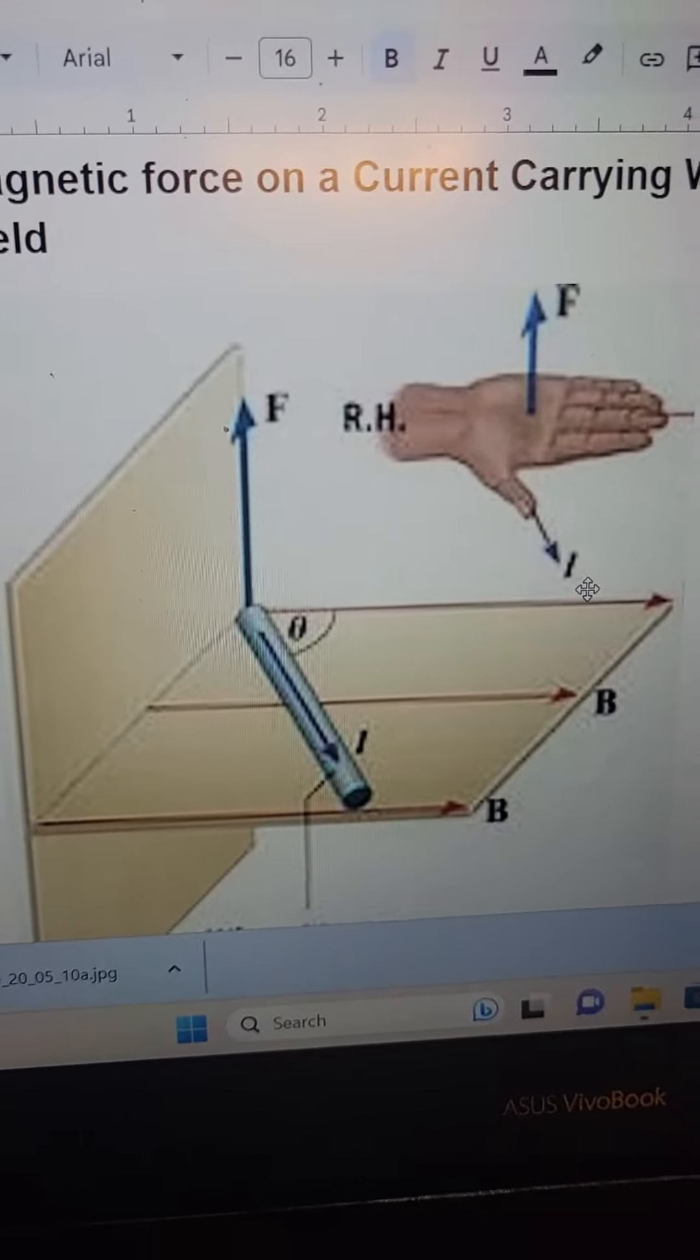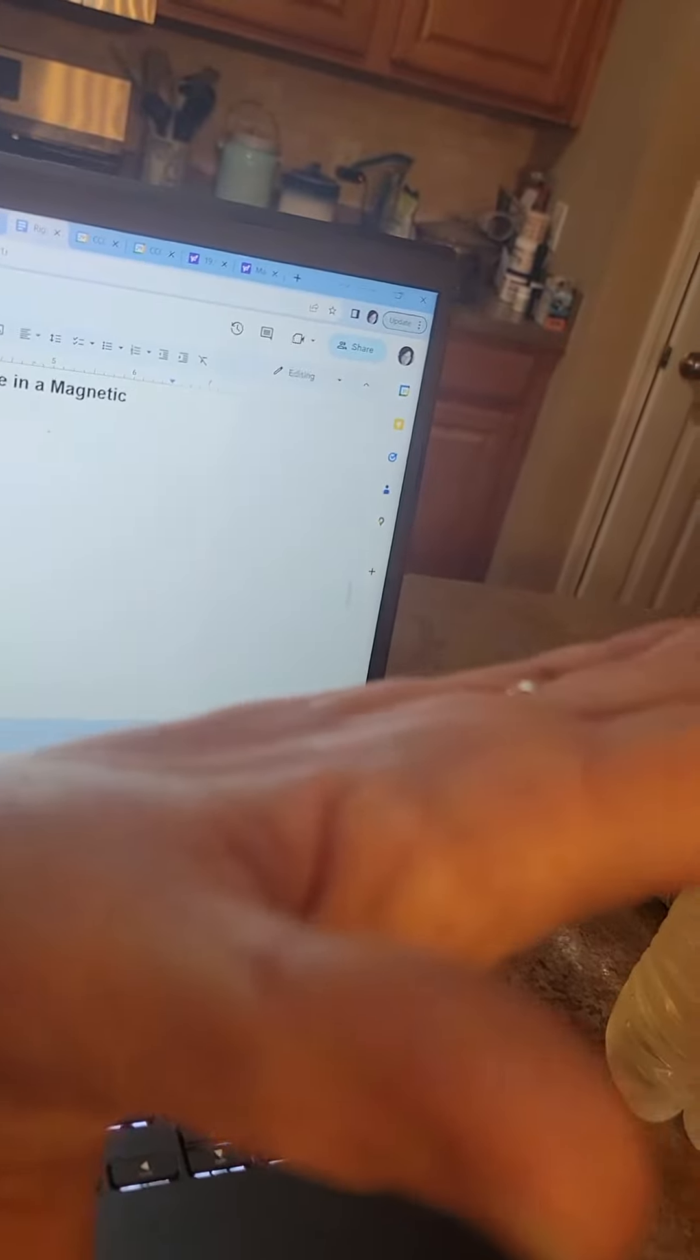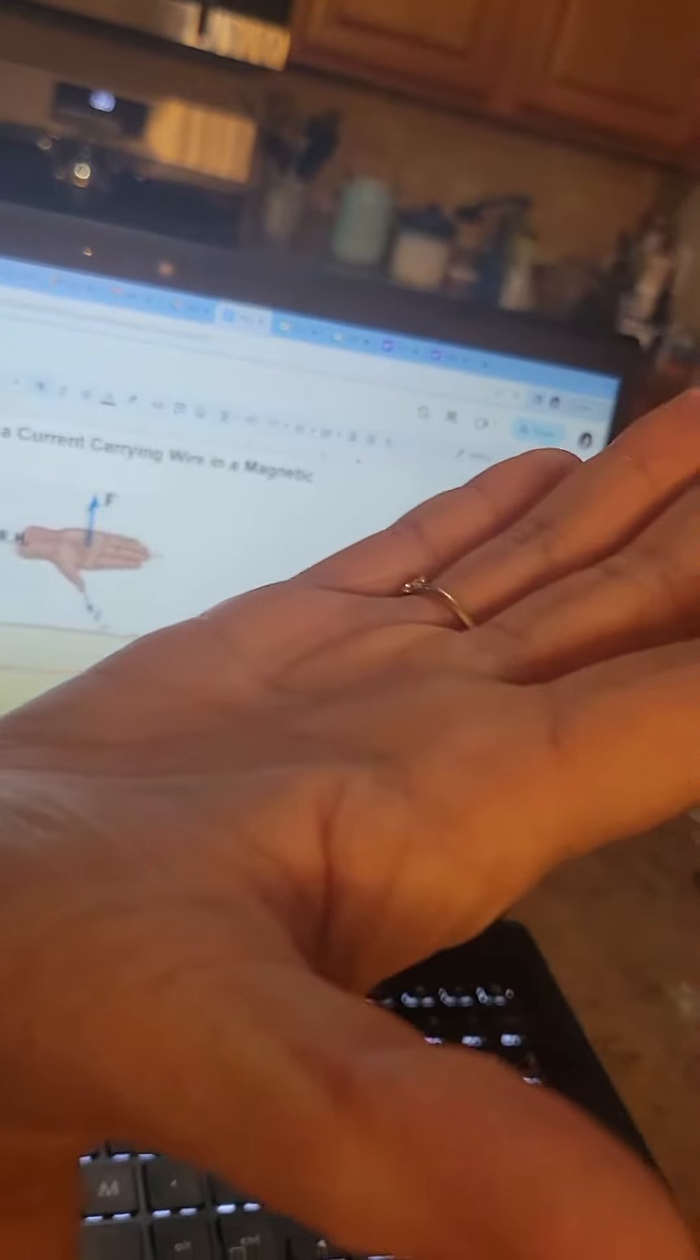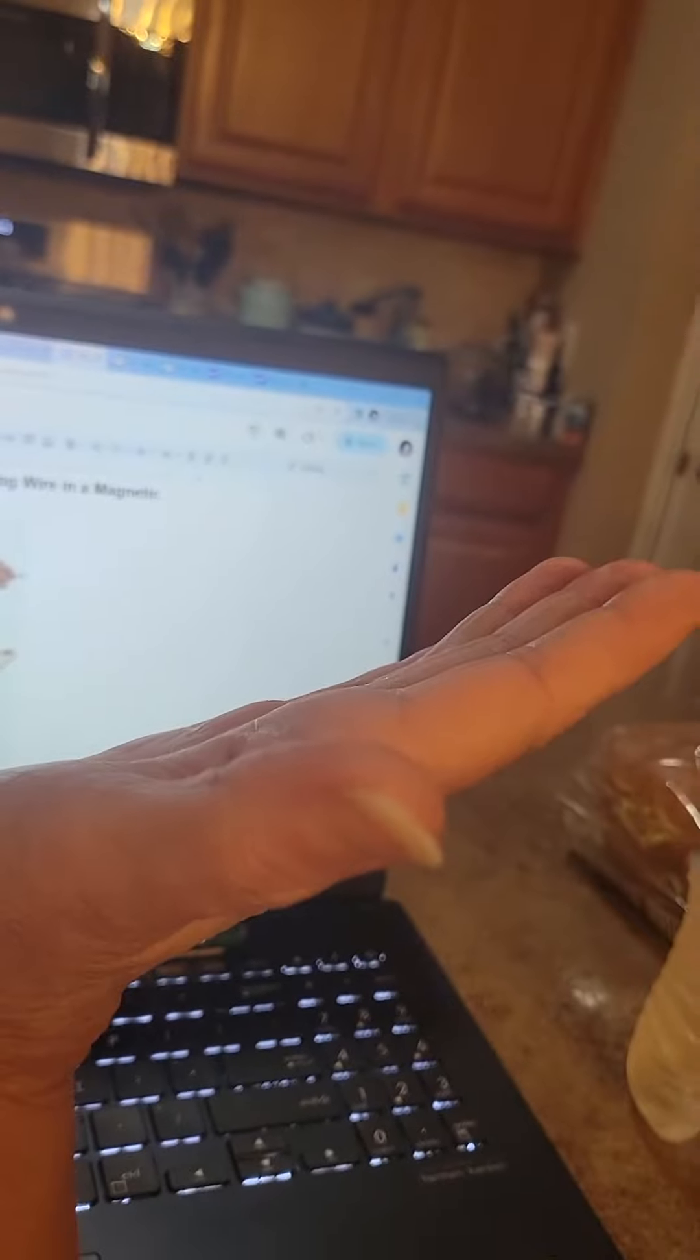So in this particular case, my fingers, I have to kind of contort my body, my thumb is coming in the direction of V, my fingers are going to the right, and my palm points straight up.